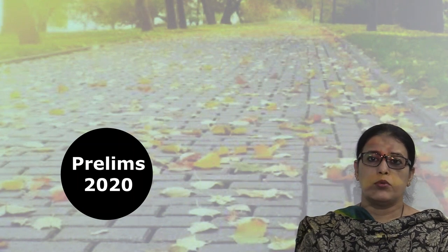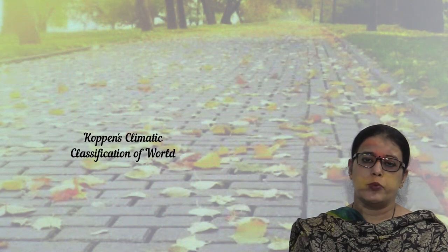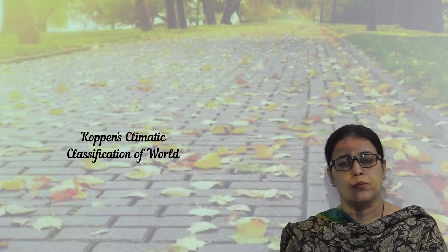Köppen's climatic classification scheme is given in our NCRT. The name of the scholar is Vladimir Köppen. He was a German climatologist who propounded the empirical classification scheme for climate. In the original scheme of 1931, Köppen talked about five climate types, each major climate type denoted with uppercase alphabetical symbols.